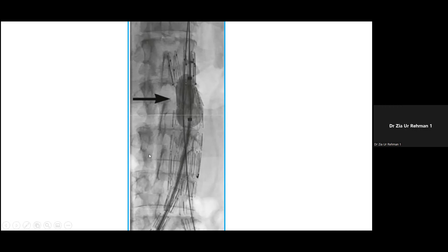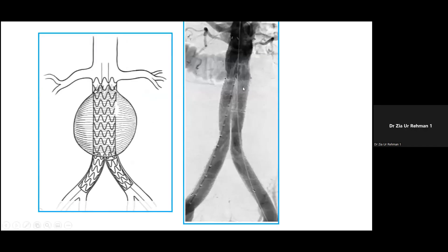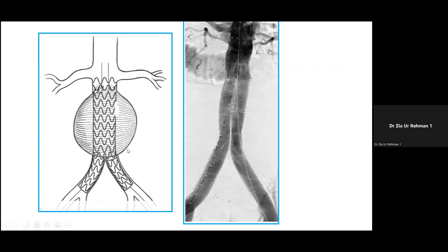Stent flaring is done at proximal and distal sites to prevent type 1 endoleak, and at the junctional site to prevent type 3 endoleak. The final step is a check angiogram to assess for any endoleaks. Type 1 and type 3 endoleaks appear early; type 2 endoleaks require delayed images, as they typically arise from lumbar vessels and the inferior mesenteric artery. The femoral access is then closed primarily or with endarterectomy and patch if there is plaque.